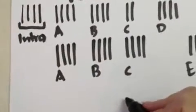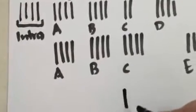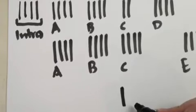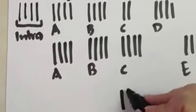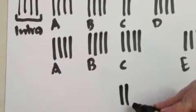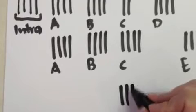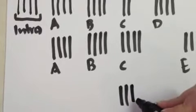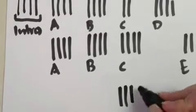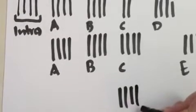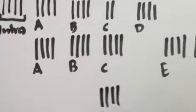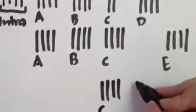[Counting chorus again:] 1, 2, 3, 4, 5, 6, 7, 8 — set 2: 2, 3, 4, 5, 6, 7, 8 — set 3: 2, 3, 4, 5, 6, 7, 8 — set 4: 2, 3, 4, 5, 6, 7, 8.